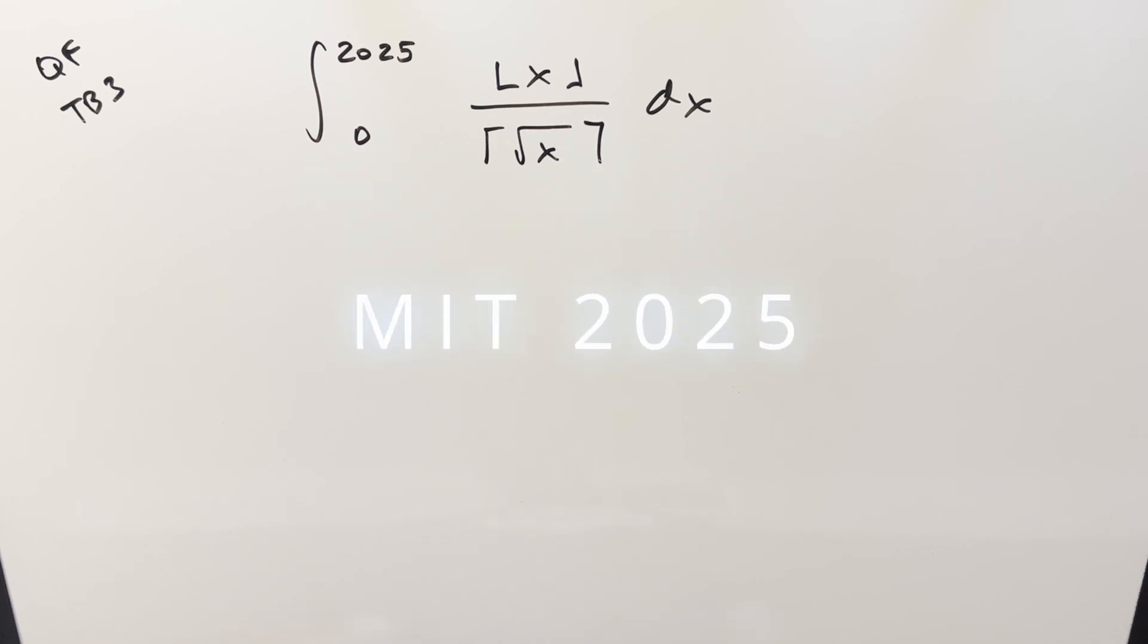Okay, we have here today another integral, MIT 2025 quarterfinals, tiebreaker number three. We have the integral from zero to 2025, floor function of x over the ceiling function of square root of x dx.